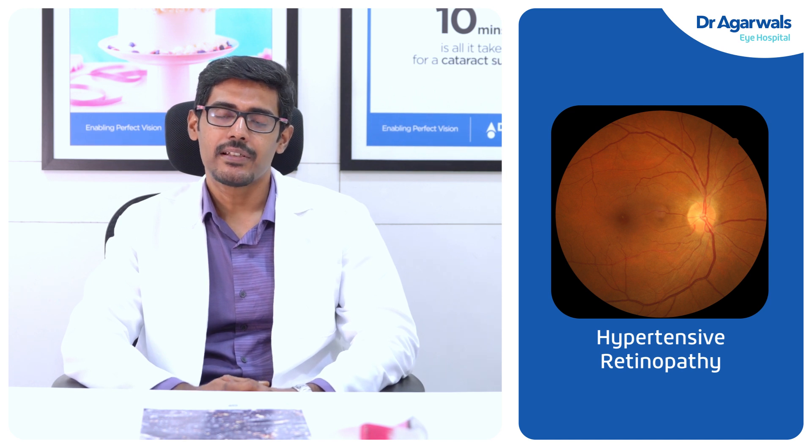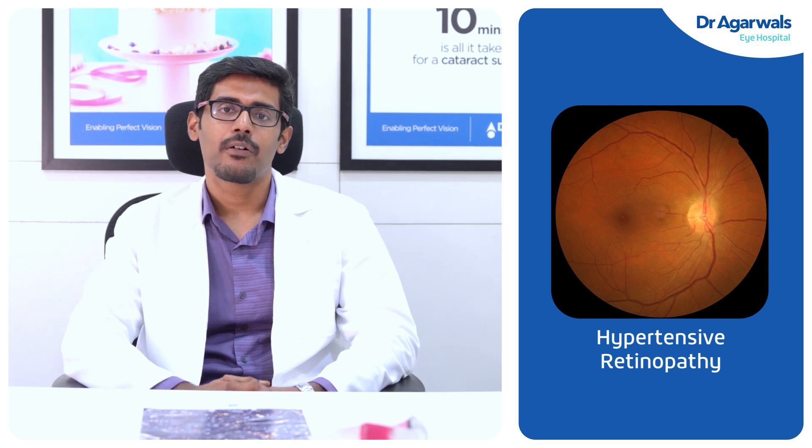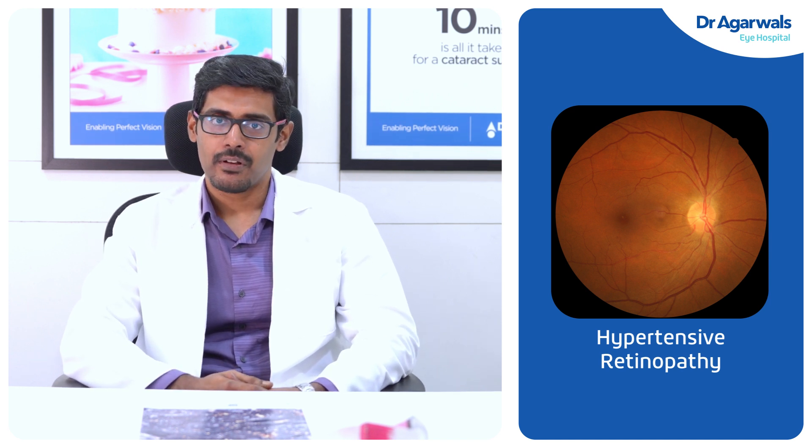Hypertensive retinopathy means patients who are affected with hypertension or blood pressure fluctuations tend to get affected in the retina as well. As we are aware, hypertension can cause vascular blockages in the heart and other body organs, including causing strokes. Similarly, the retina also has blood vessels — arteries and veins — and in hypertensive retinopathy these arteries and veins tend to get occluded, causing visual deterioration.